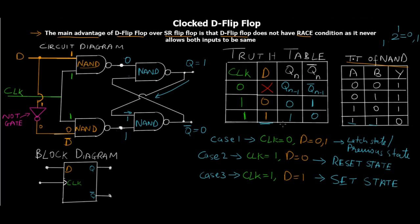So we only have three cases rather than five because in the SR flip-flop there were two independent inputs S and R, but in the D flip-flop one input is always the complement of the other. D and D-bar can never be equal, so a race condition is impossible. Notice that the truth table has no entry for an unstable or race-condition output — that is the key advantage of the D flip-flop over the SR flip-flop.